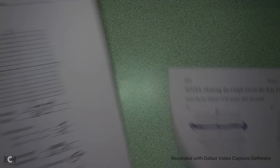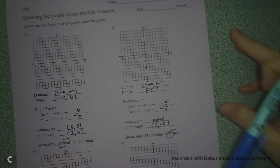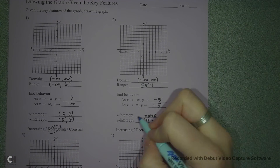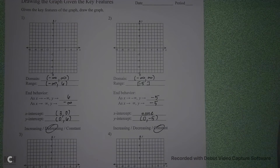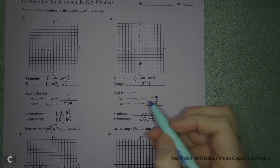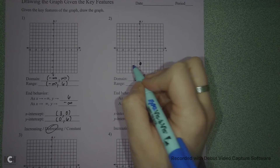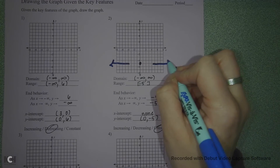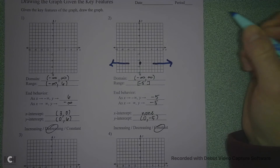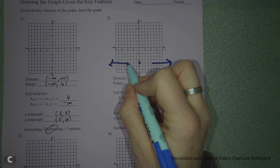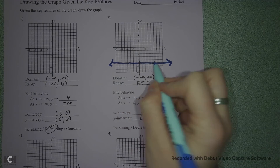Let's try another one — number two. My y-intercept is (0, -5). My end behavior is at -5 on the left, and also -5 on the right. My range doesn't go bigger than -5, so it's stuck right in the middle. And there's my graph.